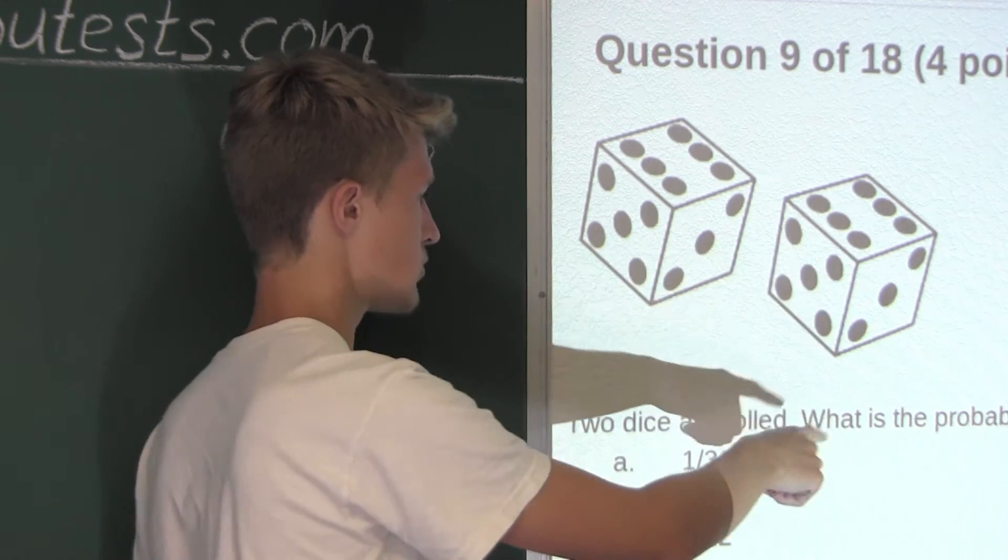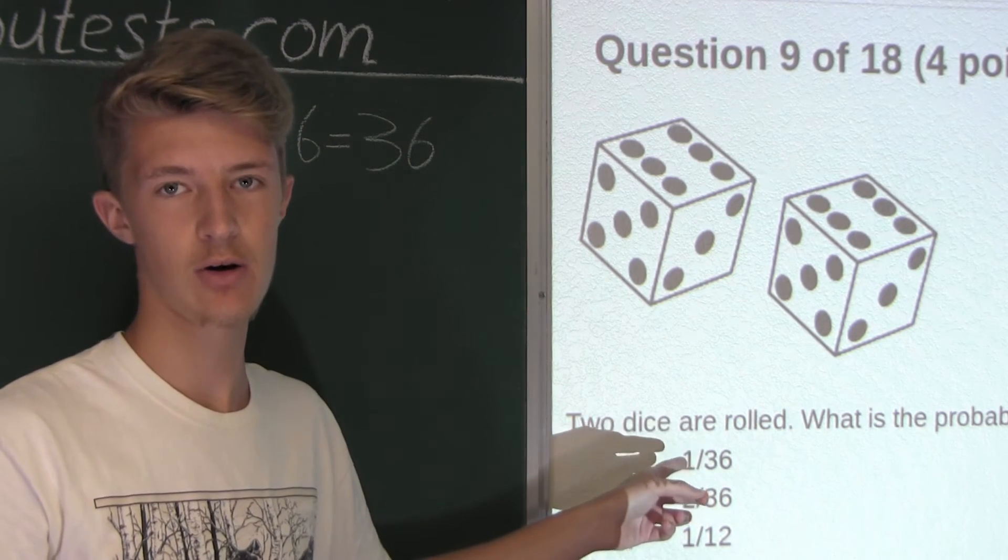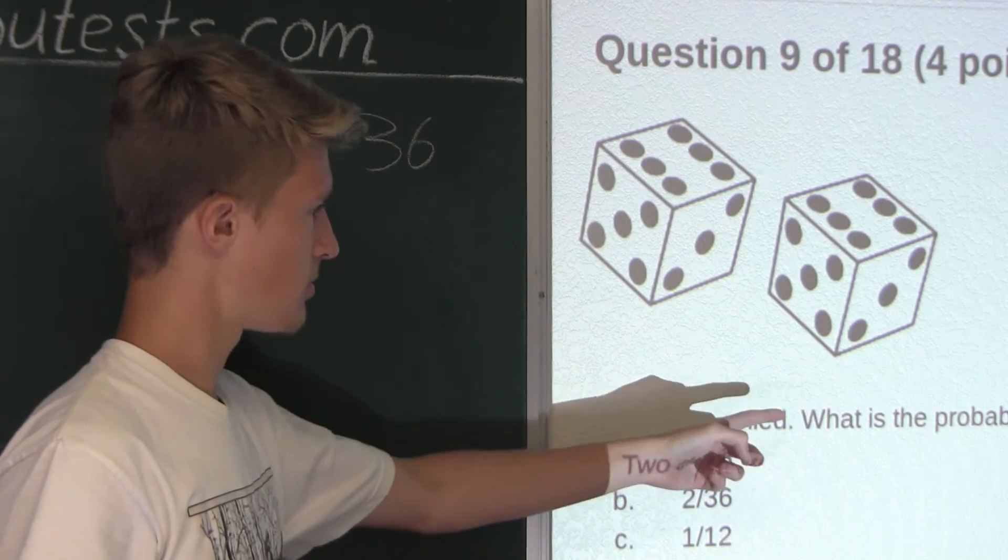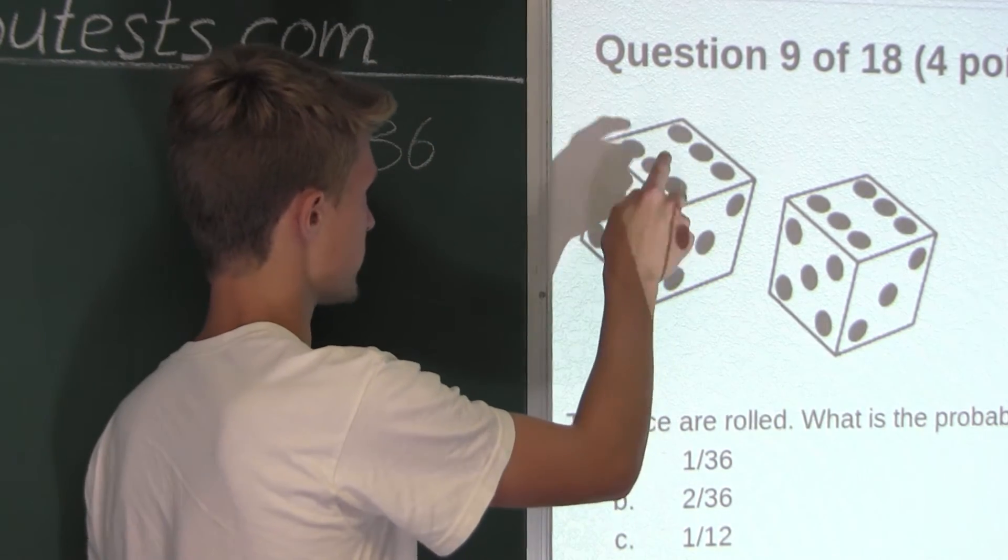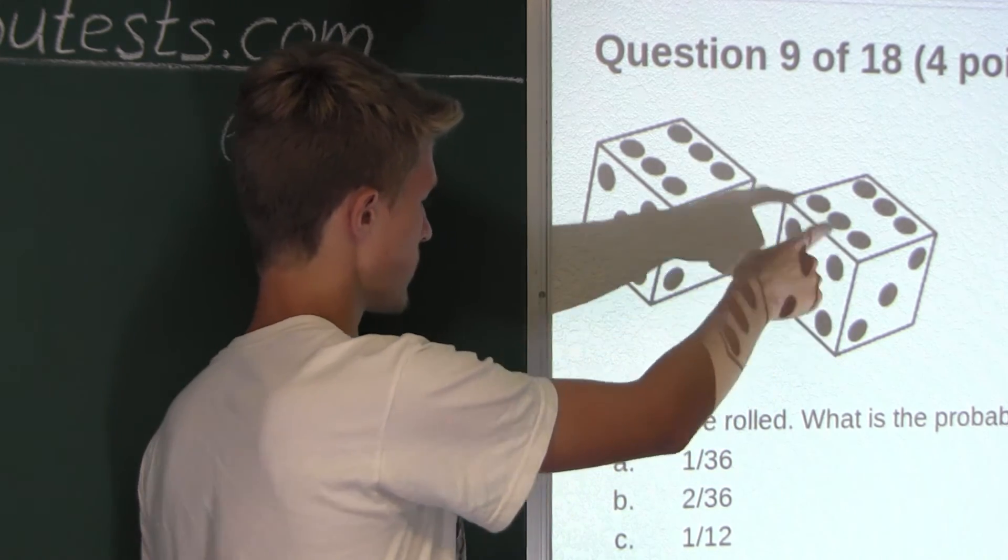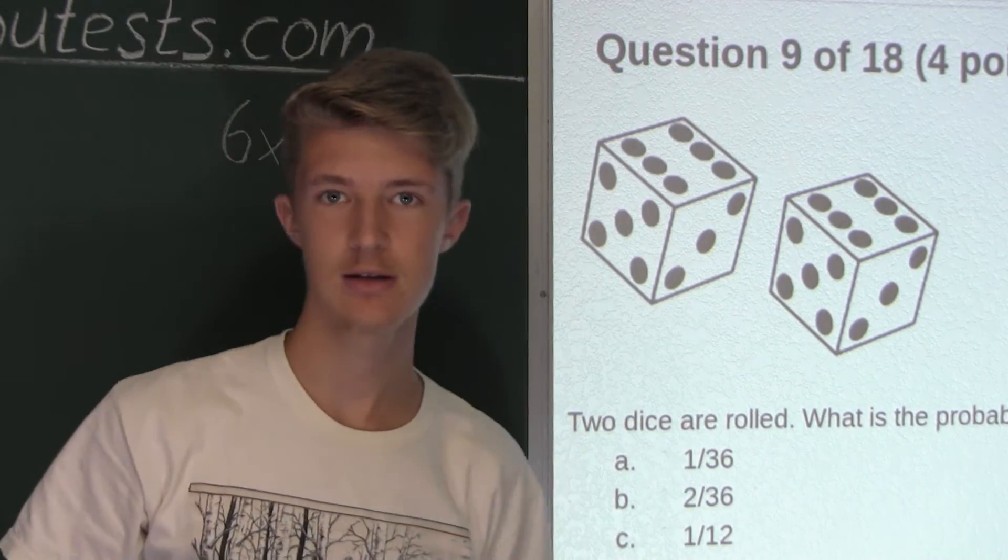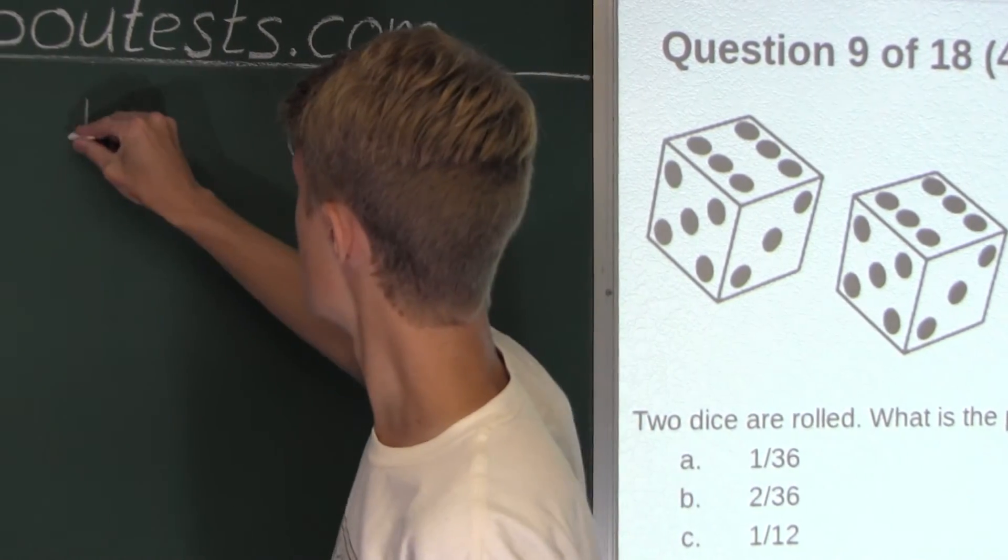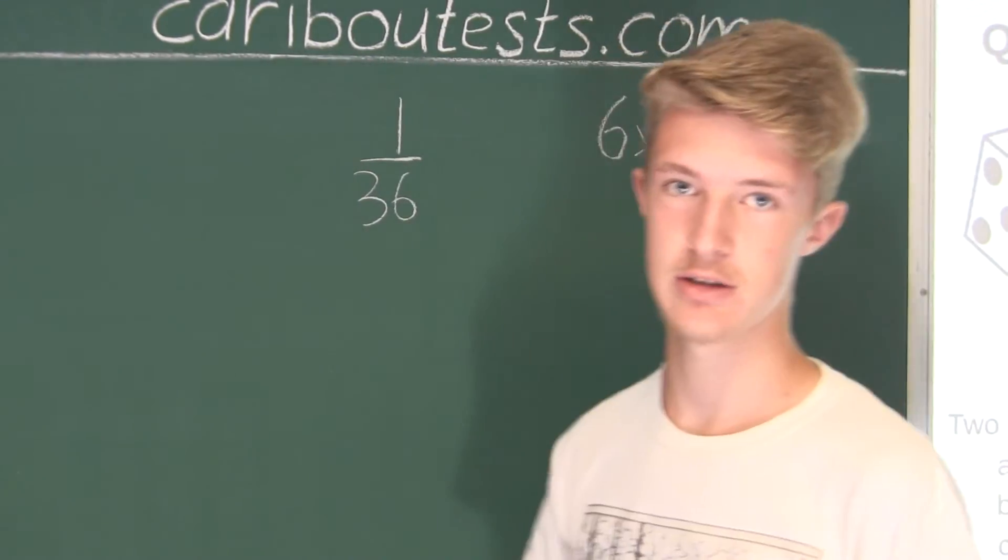Each of those is just one outcome out of 36 possible outcomes. Therefore, the probability that two sixes appear, meaning a six on the first die and a six on the second die, is just one outcome out of 36 possible outcomes. The answer is 1/36.